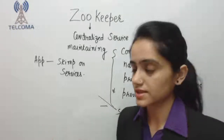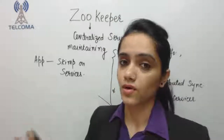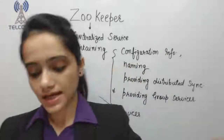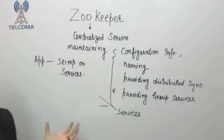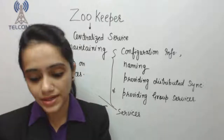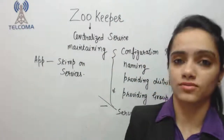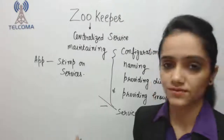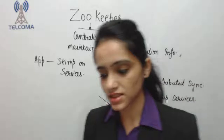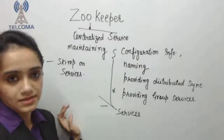In order to avoid this difficulty, applications using ZooKeeper have to skimp on all the services initially. When an application skimps on all the services, it makes them brittle in the presence of change and difficult to manage.